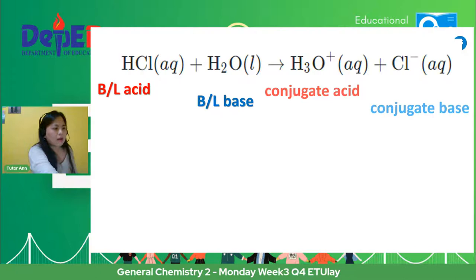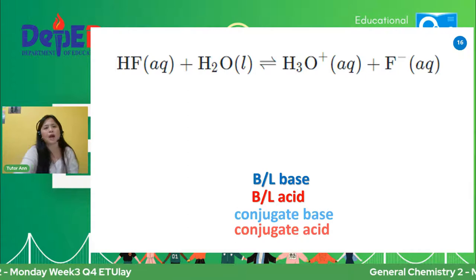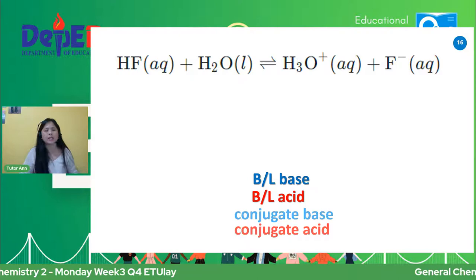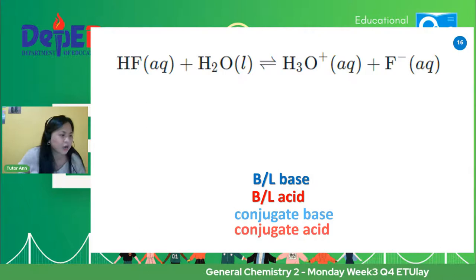Again, tandaan nyo lang yung sa Bronsted-Lowry sa reactant side — yun yung capable of donating and capable of accepting. Sa conjugate naman, yun yung substance formed. Ibig sabihin na sa product side siya. Yung acid substance formed after it accepted proton. Si conjugate base naman, the substance formed after it donated proton.